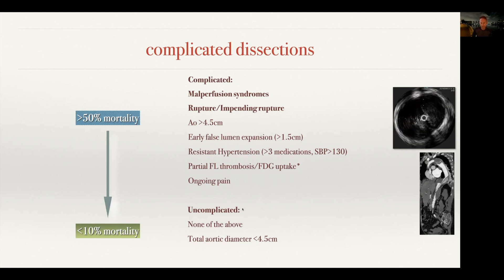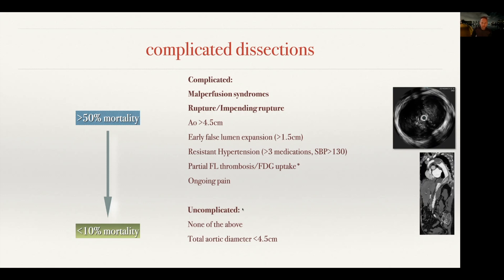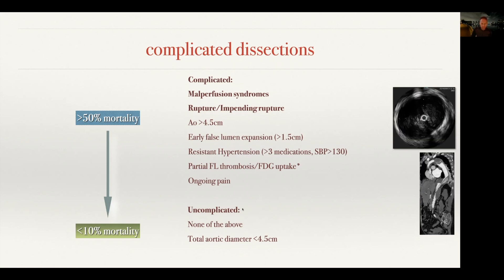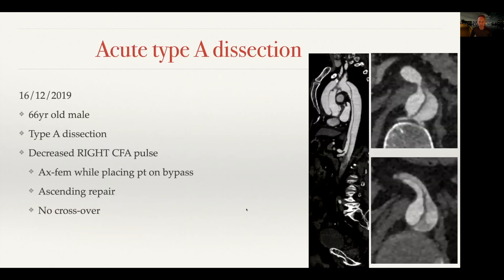The truly uncomplicated patients are a small minority with none of those features and a small aorta. To separate these out, the ones in bold — malperfusion and rupture or impending rupture — are the true complicated dissections. The others are what we call high risk and should be treated sooner rather than later, but there is a sweet spot in terms of timing.